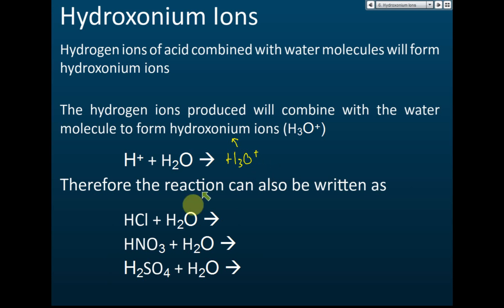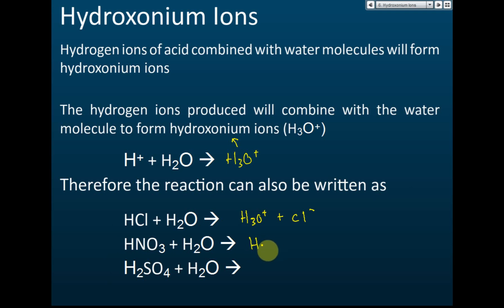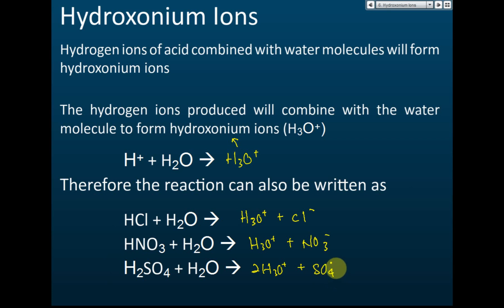For example, hydrochloric acid when it reacts with water forms hydroxonium H3O+ plus chloride ions. Nitric acid reacts with water to form H3O+ hydroxonium ion and nitrate ions. Sulfuric acid when it reacts with water forms two hydroxonium ions plus sulfate ions, because it has two hydrogen ions, so we need two water molecules to form the two hydroxonium ions.